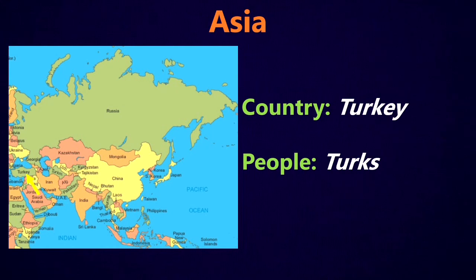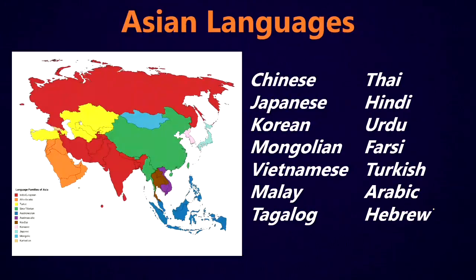We've got the country of Turkey, and the people are called Turks. So again, we see we don't have one of the common suffixes here — we just have the plural S. Among Asian languages, again, there are too many to list. So some of the main ones are Chinese, Japanese, Korean, Mongolian, Vietnamese, Malay, Tagalog, Thai, Hindi, Urdu, Farsi, Turkish, Arabic, and Hebrew. We can see some of the common suffixes here when we're looking at the names of the languages, but we also see that some of the languages don't have any of the common suffixes, like Hebrew, Malay, Tagalog, and Urdu.